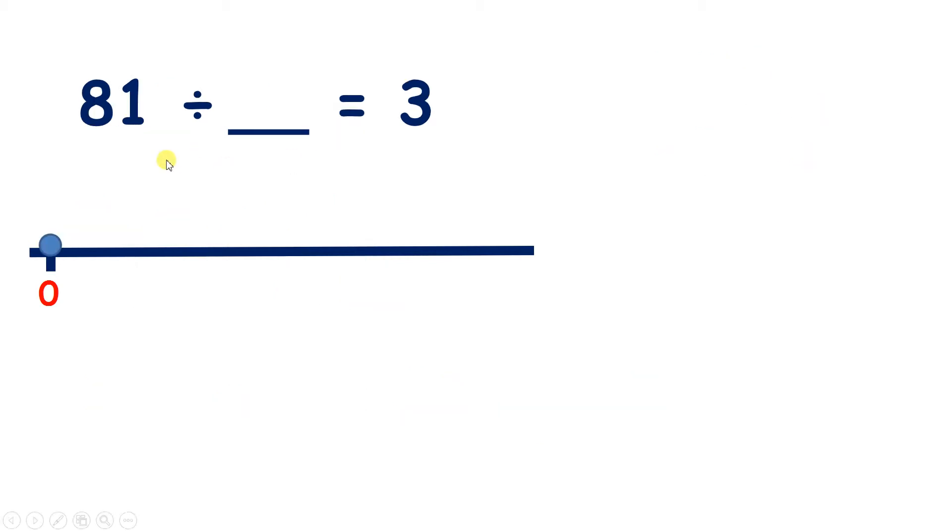Now we have 81 divided by something equals 3. So now pause the video and see if you can find that missing number.